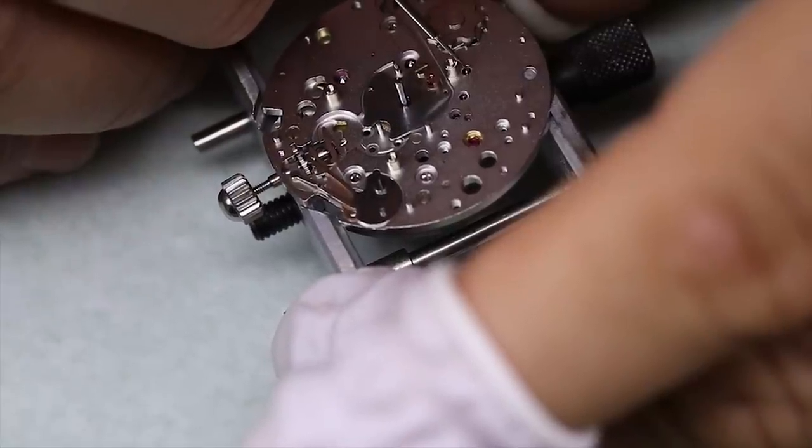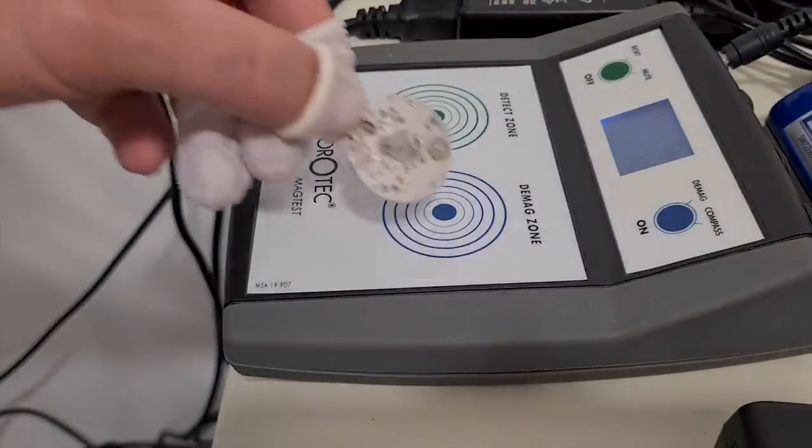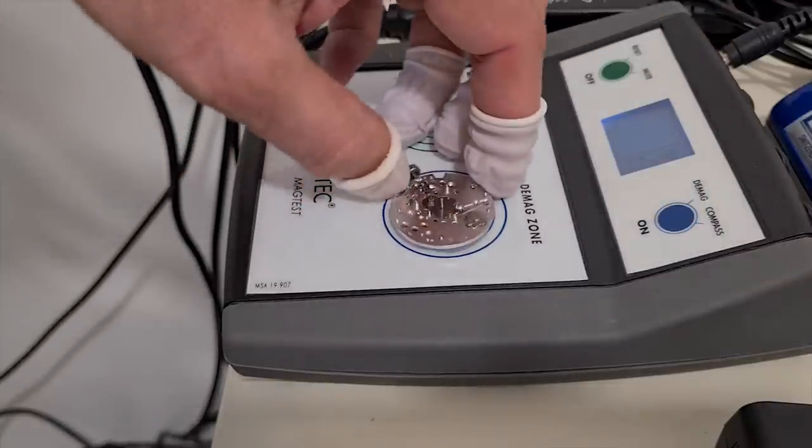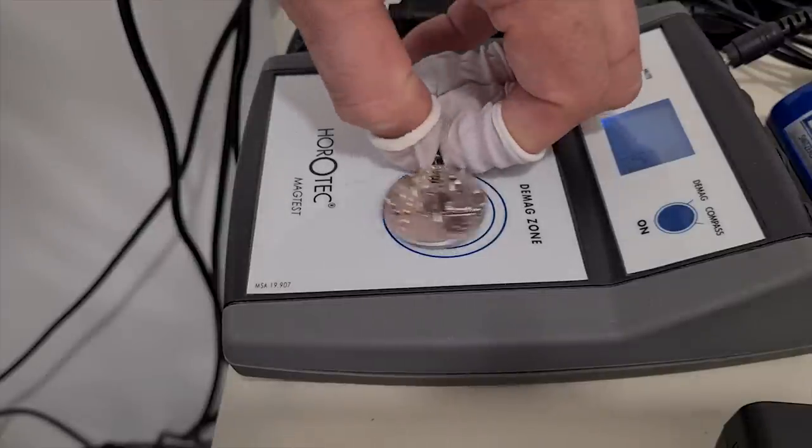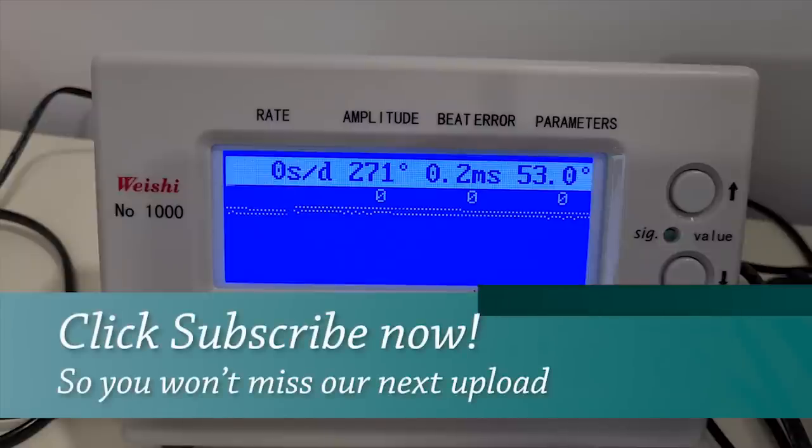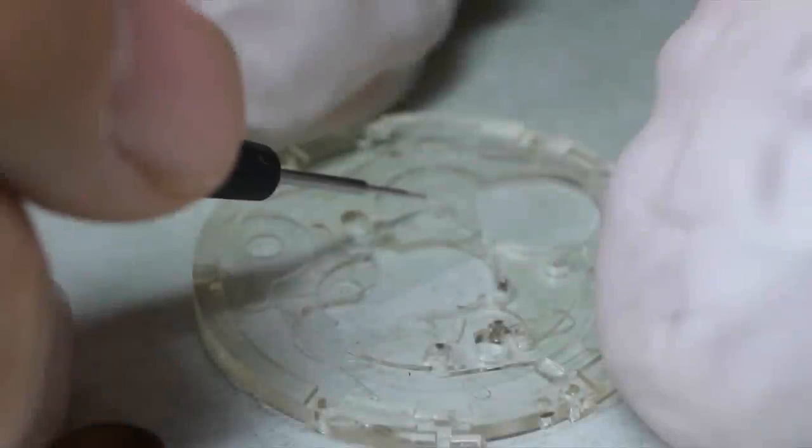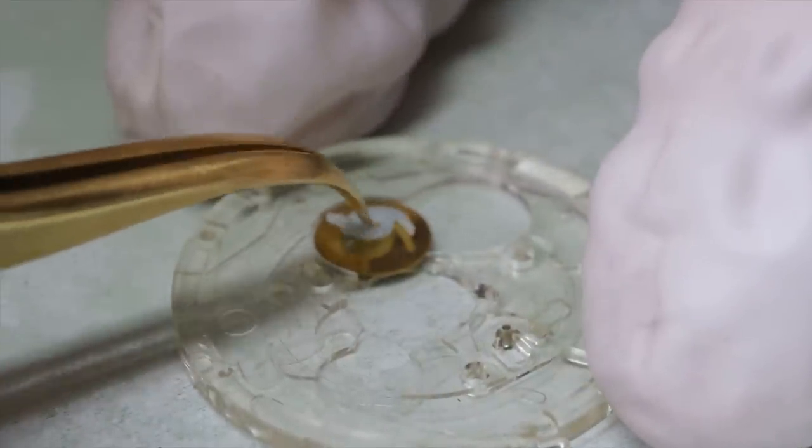Okay, let's oil the pivots. And we're going to demagnetize the movement as we always do. One thing here - if the movement has a hacking function like this one does, it's always a good practice to stop the balance when you demagnetize. And that performance is acceptable, so maybe this ain't a half bad movement after all.